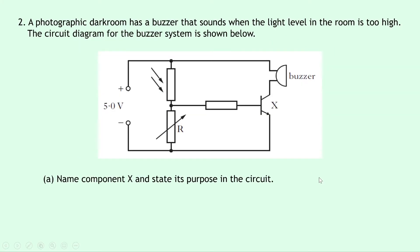Question 2 says that a photographic dark room has a buzzer that sounds when the light level in the room is too high. The circuit diagram for the buzzer system is shown below. Here we have a 5 volt supply, an LDR as the upper component and a variable resistor as the lower component, then a resistor, a transistor, and a buzzer.